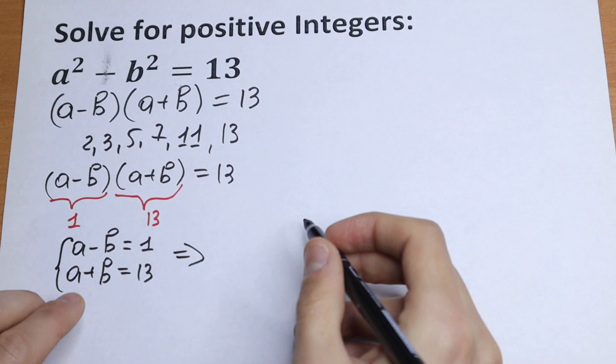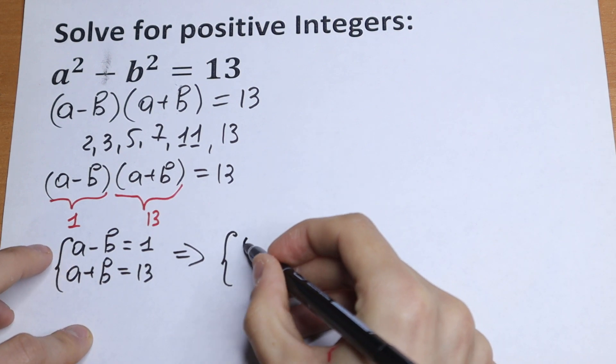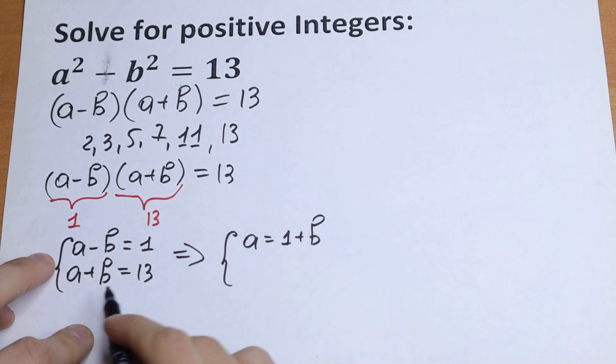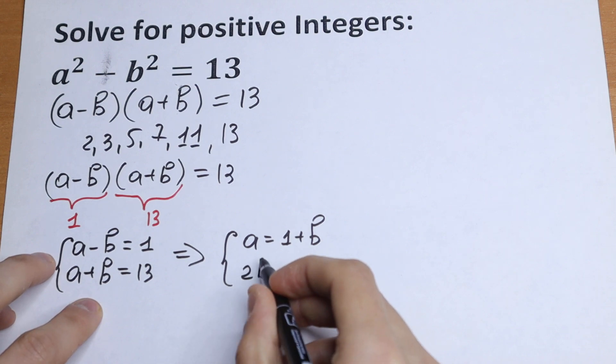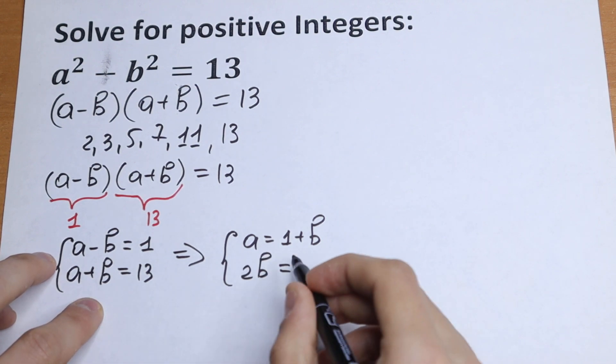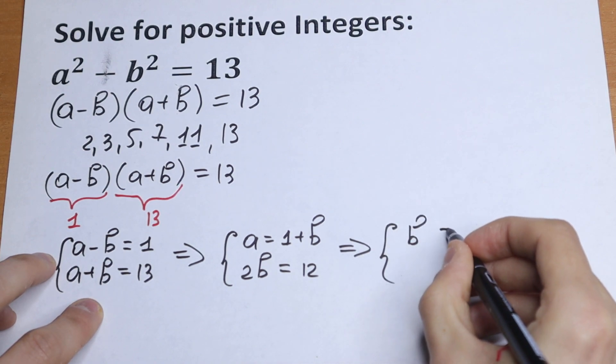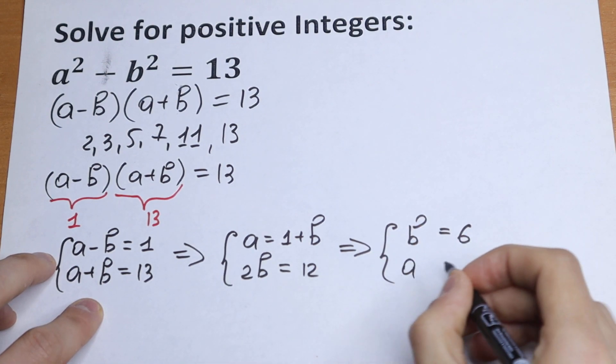How can we solve this? Let's write an equation from here: a equals 1 plus b. And write here 1 plus b plus b, it will be 2b equal to 12. And b equals 6, and from here a equals 7.